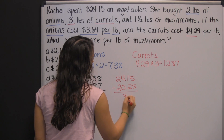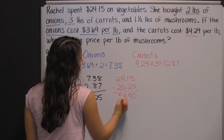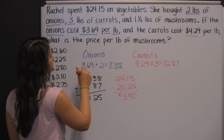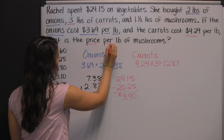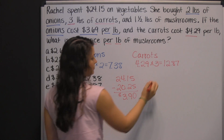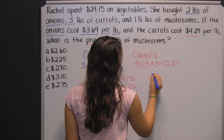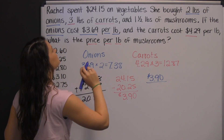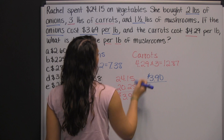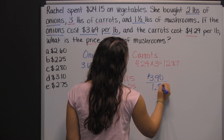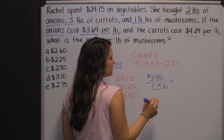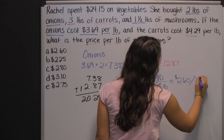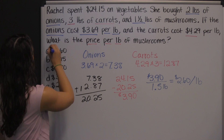What you're left with — three dollars and ninety cents — is just what she spent on mushrooms. For the mushrooms, we're trying to find the price per pound. We have the price: three dollars and ninety cents. 'Per' tells you to divide that by the number of pounds, and her mushrooms were one and a half pounds. So divide three ninety by one point five pounds — three dollars and ninety cents divided by one and a half is two dollars and sixty cents per pound. That's the price per pound of mushrooms.